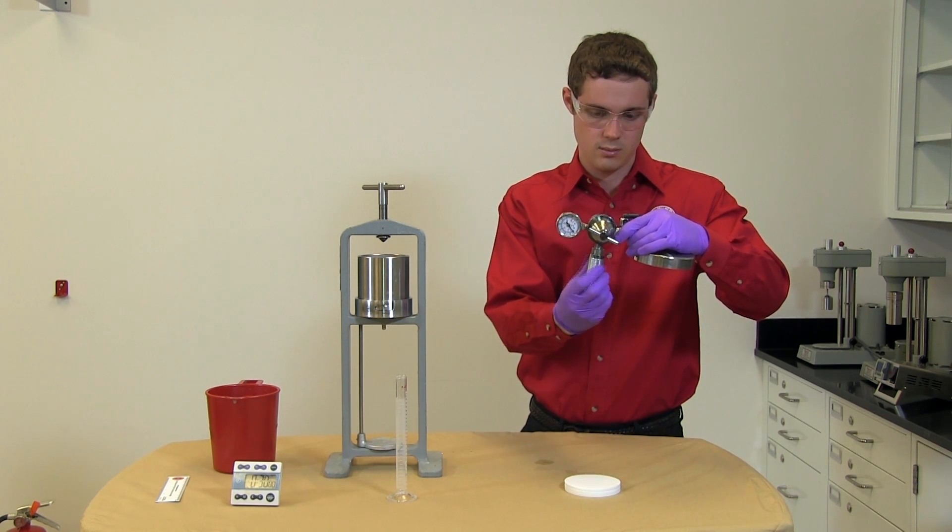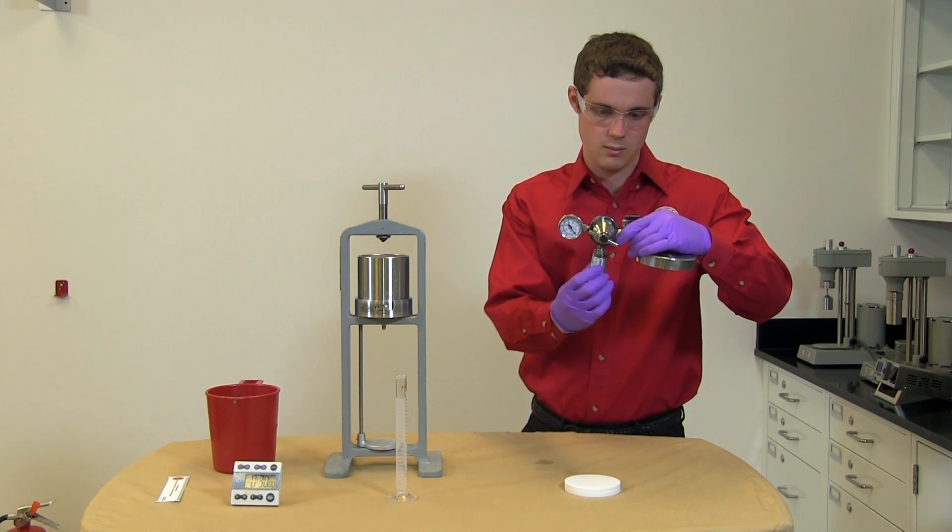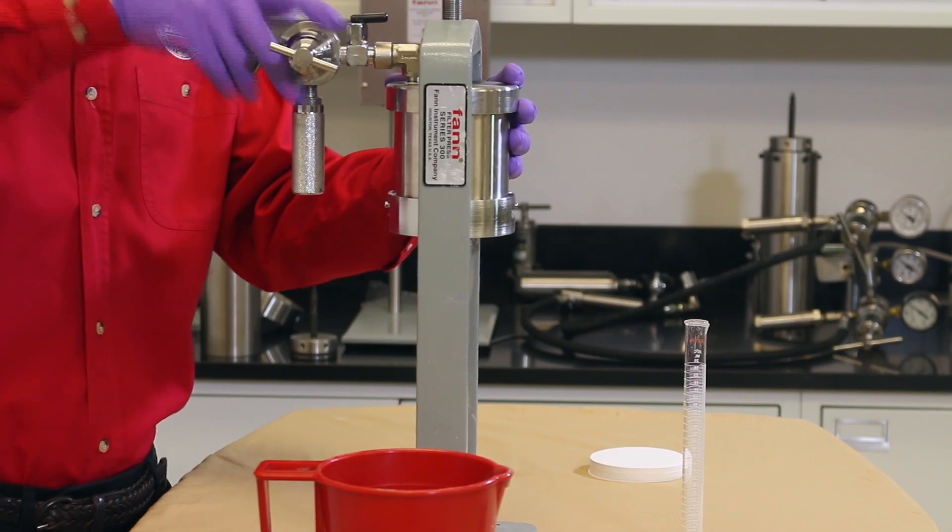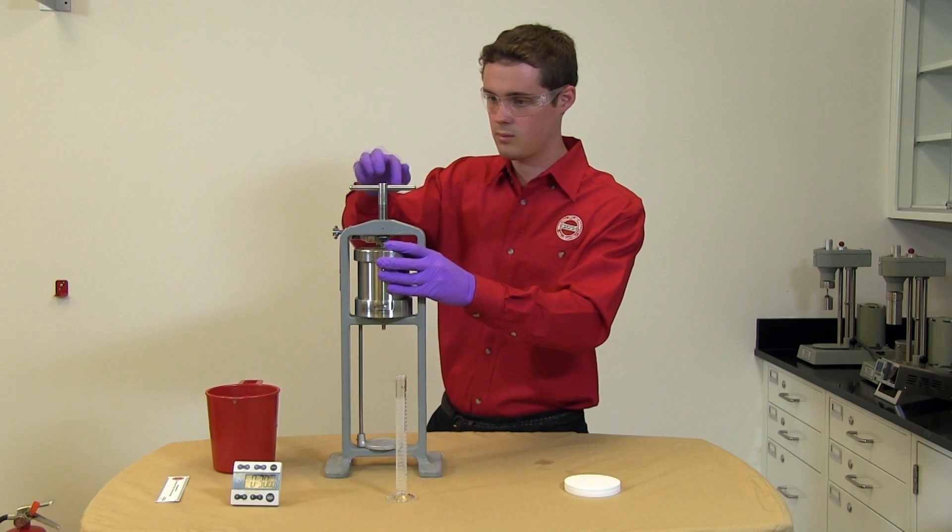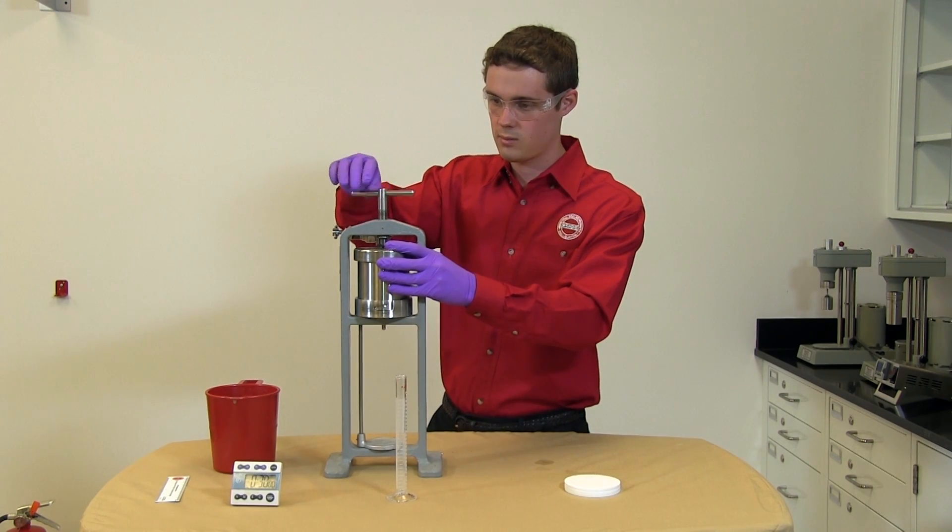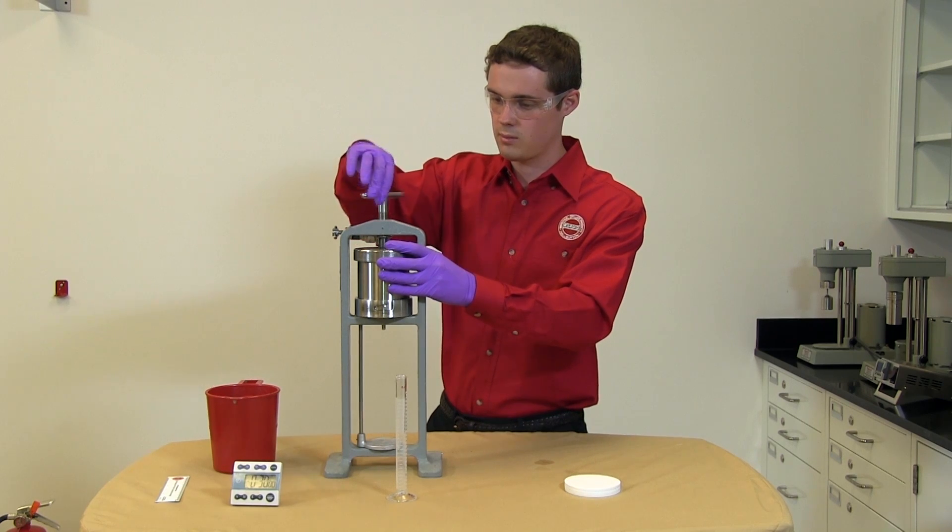We have the top air assembly. We need to add a gasket to this also. Attach this assembly to the top of the barrel. We'll be putting this cylinder under 100 pounds of pressure, so be sure the set screw is tightened securely.